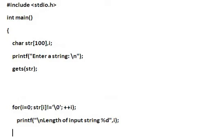Look at this program — the same logic but without using k, using a for loop to find the length. Look at the for loop clearly. The shortcut notation: i is equal to 0, str[i] not equal to backslash 0, and ++i, followed by a semicolon. We never put a semicolon after a for loop normally — this means inside the for loop we do not have any statements. So once the condition becomes false, you come out of the loop, and i itself is the length of the input string. A simple shortcut notation.